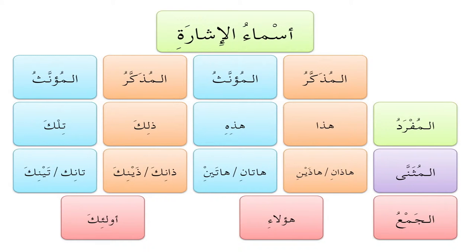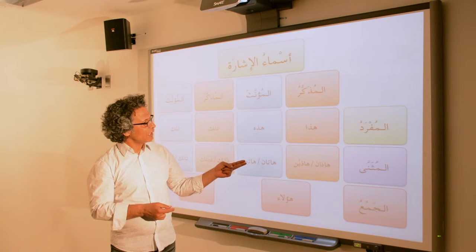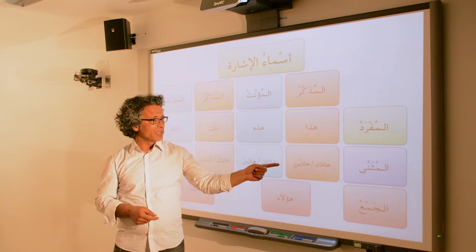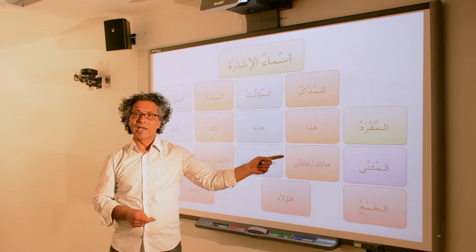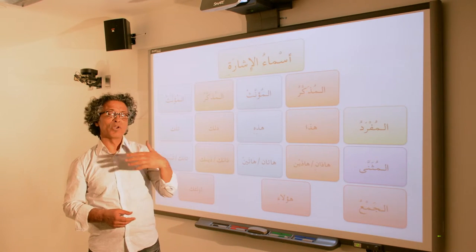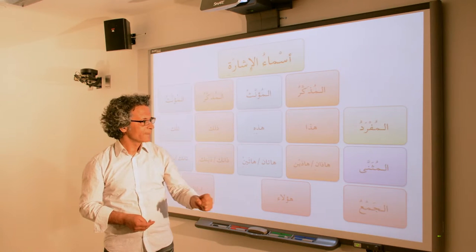هذاني, هذيني — remember that with the مثنى there are actually these two forms. When we get into الإعراب and put in case endings, we will talk about that. Feminine: هتاني, هتيني. Notice that there's an alif written after the ه now, whereas in هذا and هذه, you pronounce an alif but you don't write it.